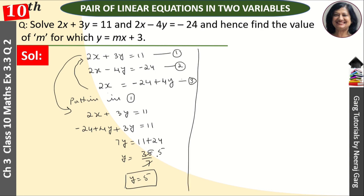Is y ki value ko hamein third mein put kar denge, usse x ki value nikal denge. Putting in 3. Toh humari paas aa jayega 2x is equal to minus 24 plus 4 into 5. So 2x is equal to minus 24 aur plus 20. Then x is equal to minus 4 divided by 2. Aur yeh aa gaya humari x ki value minus 2.